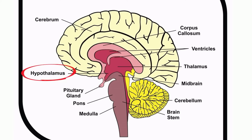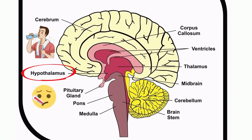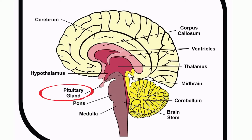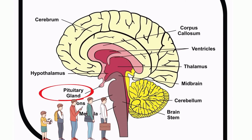The hypothalamus is a small region located at the base of the brain. It's responsible for regulating body temperature, thirst, and sleep. The pituitary gland is a small gland located at the base of the brain and it's responsible for producing hormones that regulate growth and development.